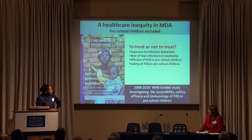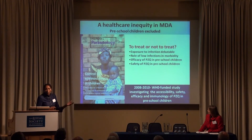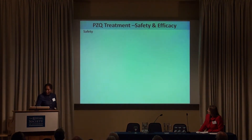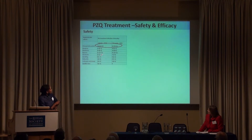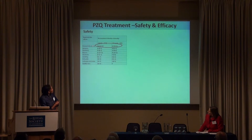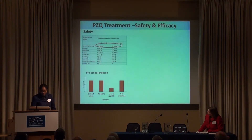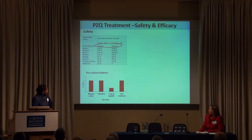We looked at the accessibility, safety, efficacy, and immunology of Praziquantel in preschool children — the immunology being important because of the hygiene hypothesis. From our safety study, we already knew from published studies in Zimbabwe that side effects occurred 24 to 48 hours after administration, the most frequent being stomach discomfort with a prevalence of about 35%. In our preschool children, the prevalence of side effects was quite low — nothing above 3%. So there's no problem with side effects 24 hours after administration.